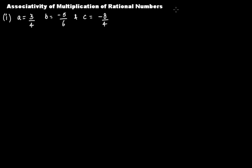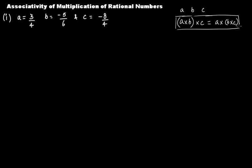What does that mean? It means that if we have three rational numbers a, b, and c, then (a × b) × c — where you first multiply a and b, then multiply that result with c — should equal a × (b × c), where you first multiply b and c, then multiply that result with a. The bracket tells the priority. If this condition is always satisfied, then we say multiplication is associative for rational numbers.